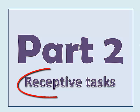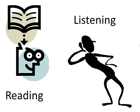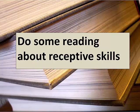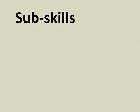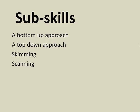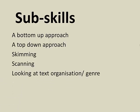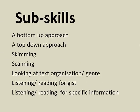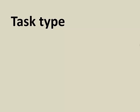Part two is describing the receptive tasks you're going to do. Receptive skills are reading and listening, so you need to think about the kind of tasks that are appropriate for those. First, do some reading about receptive skills, and then think about the sub-skills you're going to practise. Some of the terms you might read about are things like a bottom-up approach, a top-down approach, skimming, scanning, looking at text organisation and genre, listening or reading for gist, and listening or reading for specific information.